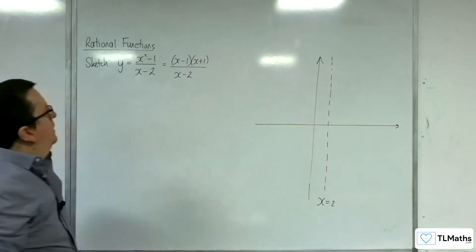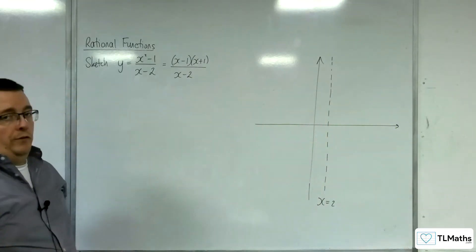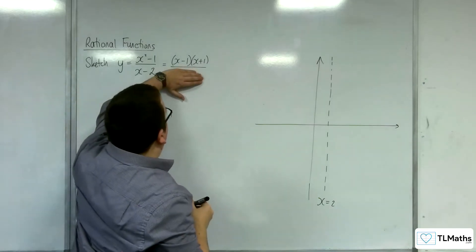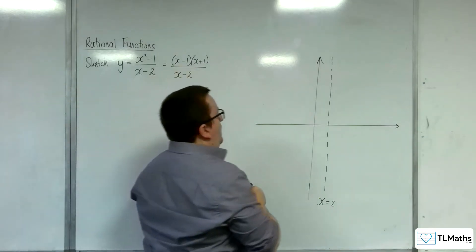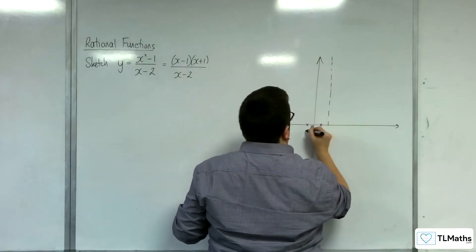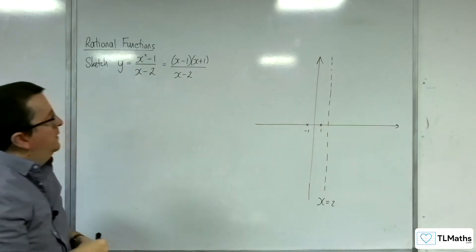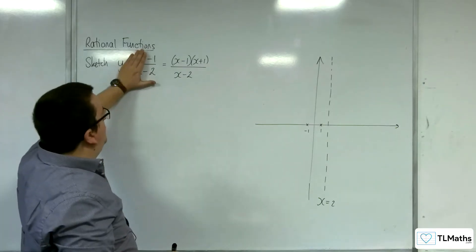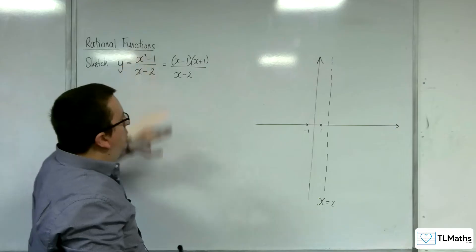Right, then where is it crossing the x-axis? Now that's when y is 0, when the numerator is 0. So that would be at 1 and minus 1. So 1 and minus 1. How about where it's crossing the y-axis? That's when x is 0. That's at minus 1 divided by minus 2. So 1 half.